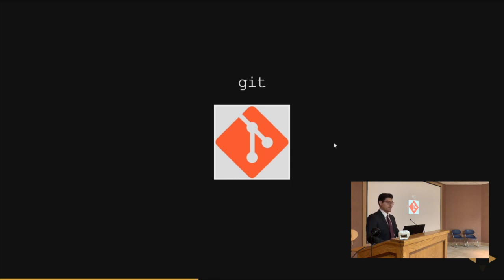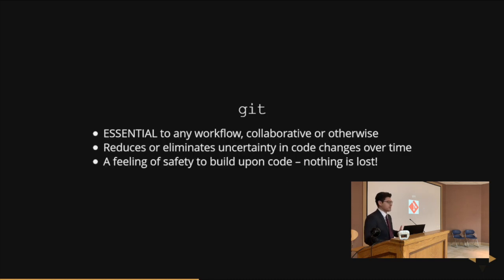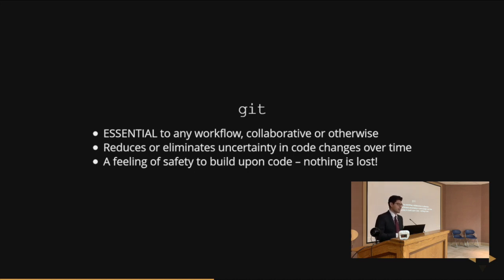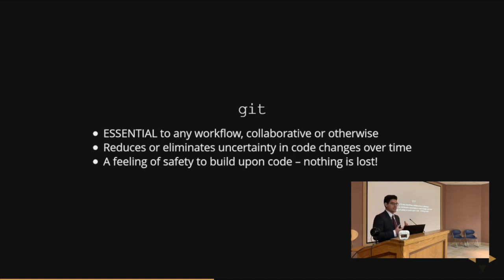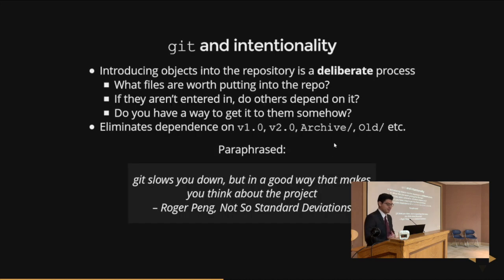Git — John gave a talk on open source collaboration a couple of months ago on git. I'm going to stay away from getting into the tool too much, but I do want to talk about how it embodies ideas of good project design. Git in my opinion is essential to any workflow, collaborative or otherwise. Why? Because it reduces or eliminates uncertainty in code changes over time. More personally, it just gives you this feeling of safety — you can build upon your code without worrying about losing something or breaking something.